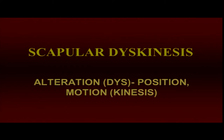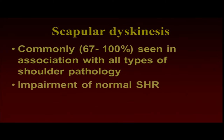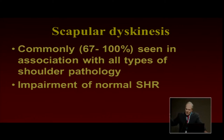Scapular dyskinesis is the term used when that motion is altered. 'Dys' meaning alteration of, 'kinesis' meaning motion. It's very commonly seen in almost every type of shoulder injury, anywhere up to 100%. We did a consensus conference, and the results were published in the September 2013 issue of the British Journal of Sports Medicine. We realized that this is not a diagnosis, it's not a cause and effect. But this dyskinesis is an impairment of optimum function. If you keep on doing it long enough, you can get injury. But it's an impairment of this normal scapulohumeral rhythm.